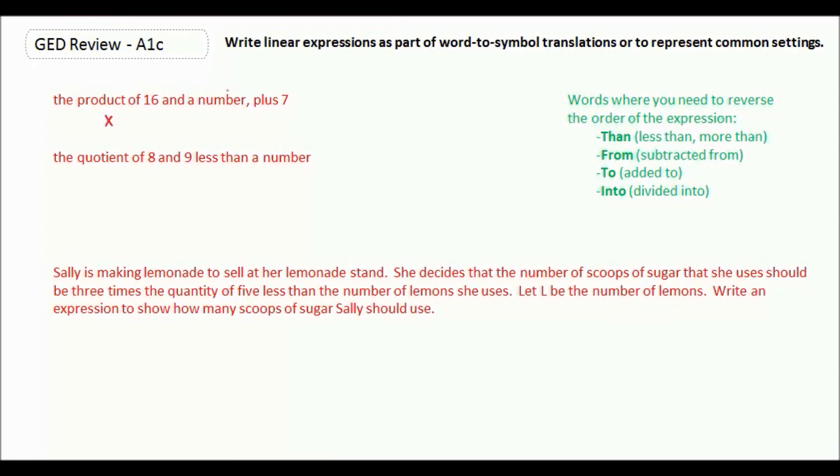And then plus obviously would be plus. So we're going to start reading: the product of 16 and a number would be 16 times, and when it says a number, it doesn't actually want you to put a number, it wants you to use a variable since we don't know what number they're talking about. So 16 times X, but really you can choose whatever you want. So 16X and then plus 7.